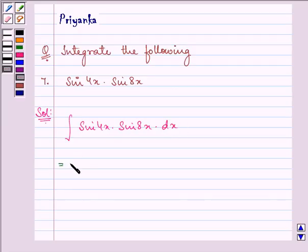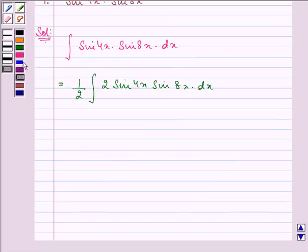Now on multiplying and dividing by 2, we have 1/2 integral of 2 sin 4x sin 8x dx. We know that 2 sin A sin B